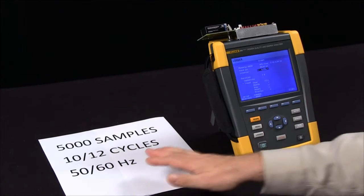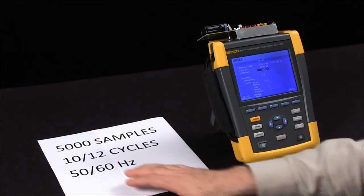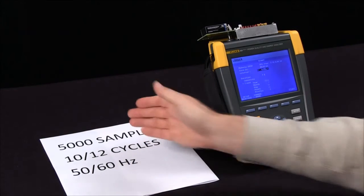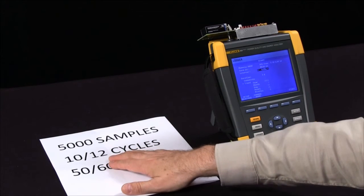So basically, for every 10 cycles if you're working on 50 Hertz, or 12 cycles if you're working on 60 Hertz, we are still sampling in the background at the rate of 5,000 samples per those specific intervals.